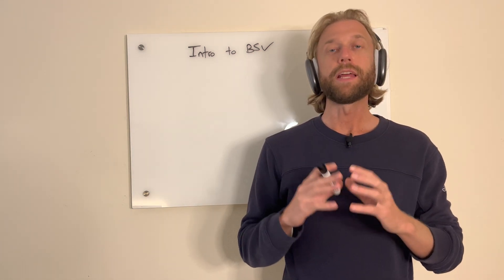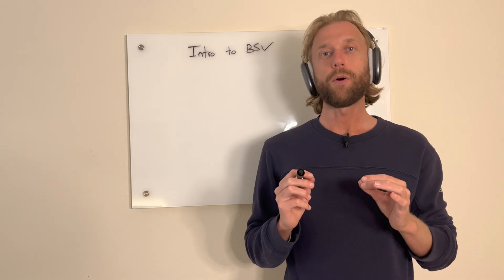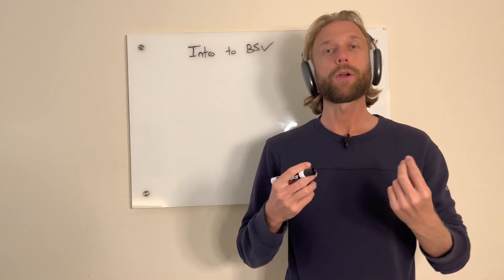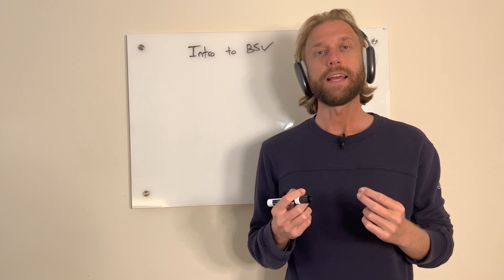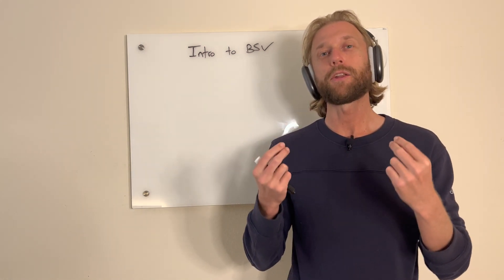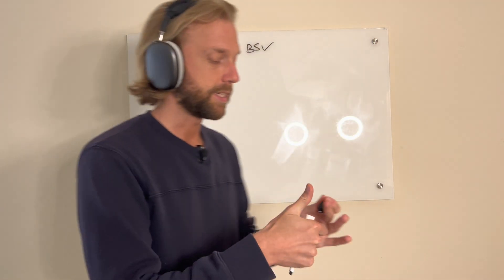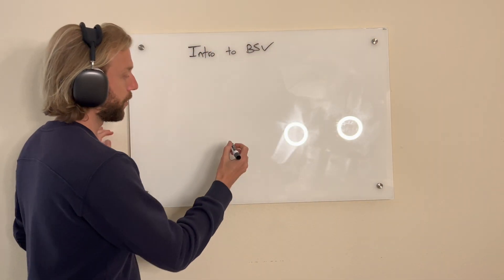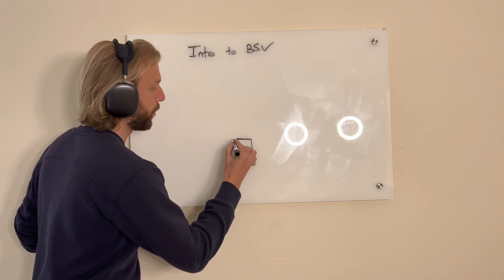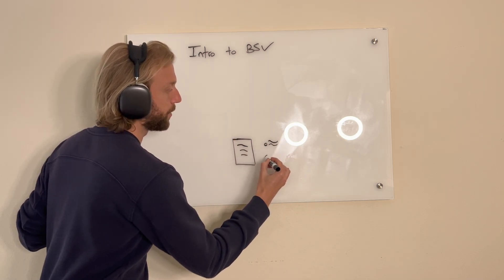In this video I'm going to give an introduction to Bitcoin SV. The easiest way of understanding Bitcoin SV, or Bitcoin Satoshi Vision, is that it's just Bitcoin — because it follows the original protocol laid out in the white paper and the early writings of Satoshi. Here's the white paper and here's the early writings of Satoshi.